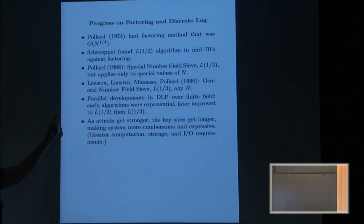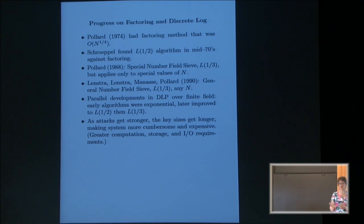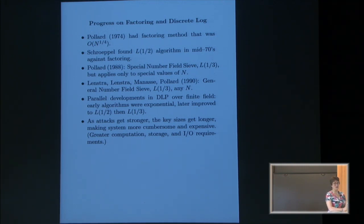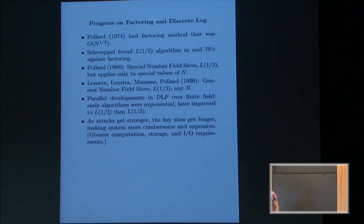The L(1/3) attack applies to the discrete log problem over finite fields but does not apply to the elliptic curve discrete log. As attacks get stronger, key sizes get longer. Security of a system is relative to current knowledge — as attacks improve, you can make longer keys or scrap the system and start over. Key sizes have to get longer and longer, and at some point it gets very cumbersome. This is where elliptic curve cryptography comes in.